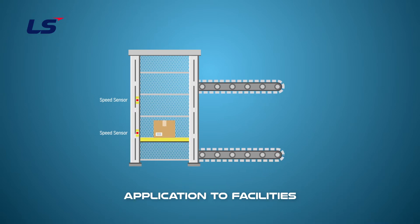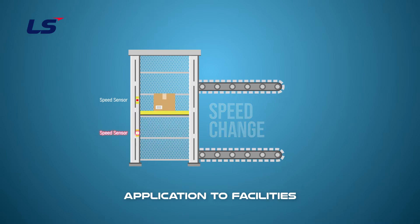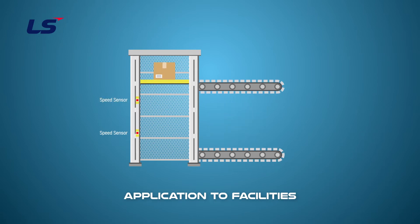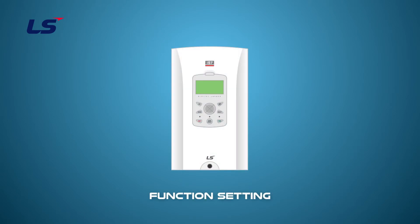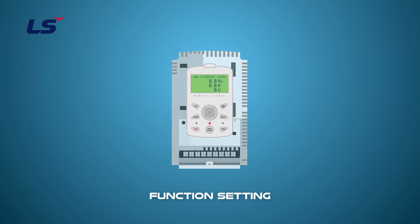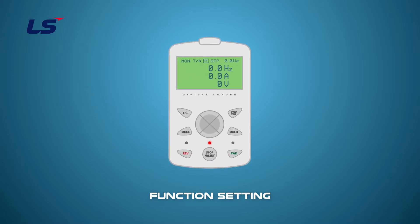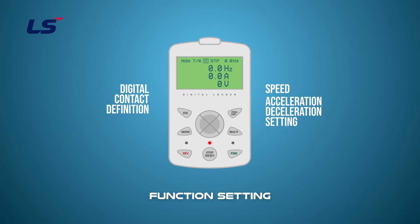The change in speed changes the speed of the motor as the pallet touches the sensor and the contact signal enters the drive. Let's learn how to set up multi-step frequency and multi-step acceleration and deceleration functions. The multi-step control consists of two things: defining multi-function terminals, and speed setting or acceleration-deceleration time setting.